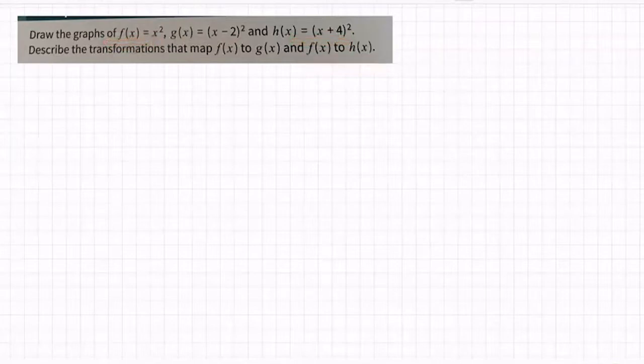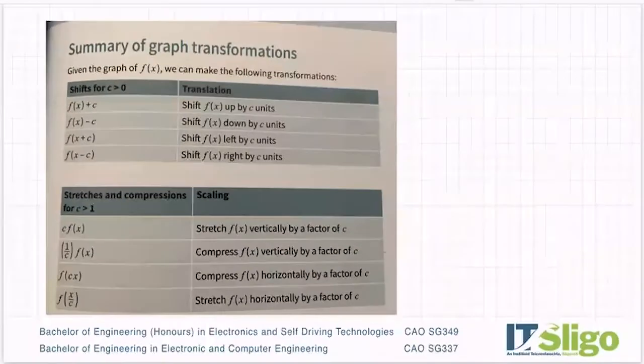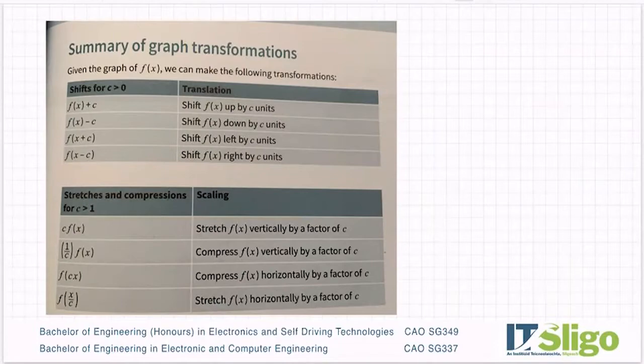Why I say it's not the end of the world if you haven't done this very well or forgotten it, is that you can always use your calculator and use the tables function and plot f(x) = x², plot g(x) = (x - 2)² and plot this and then graph them and see what happens. The descriptions might be a tiny bit harder, but you will be able to see it on the graph. However, if you're familiar with this table, it does make these questions just that little bit easier.